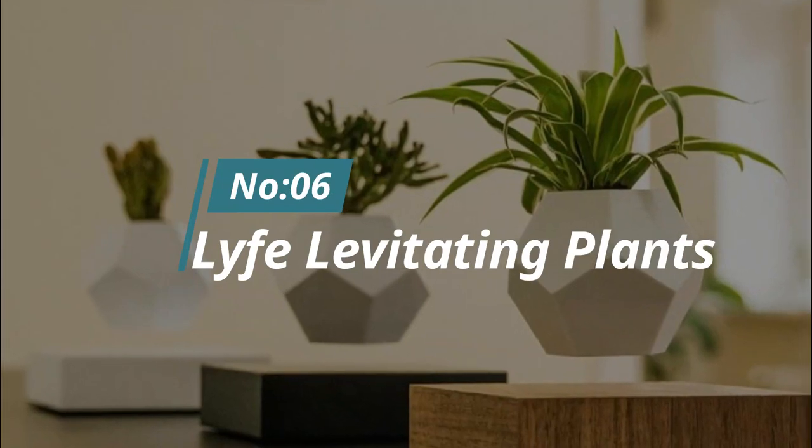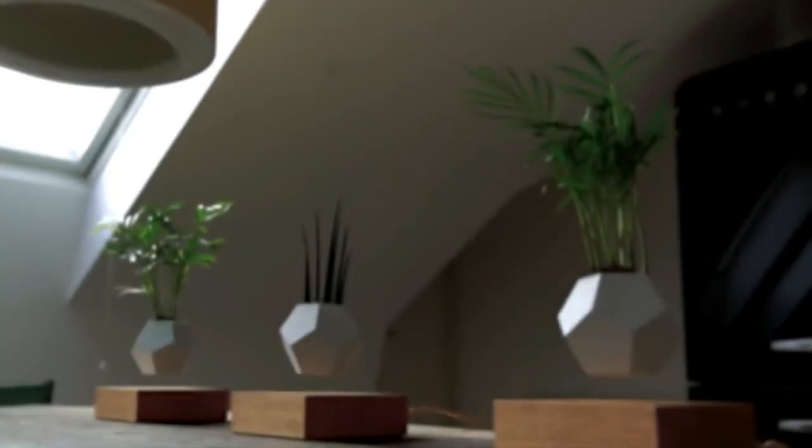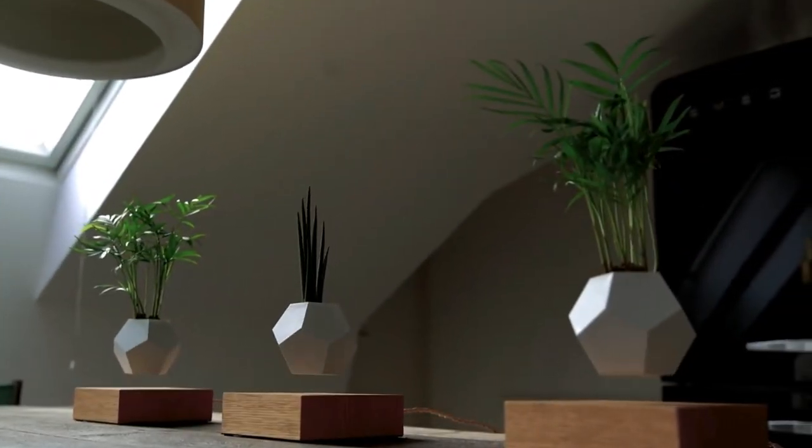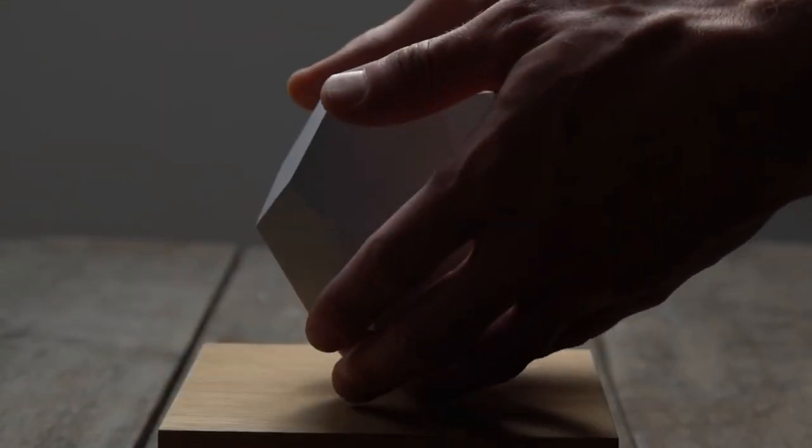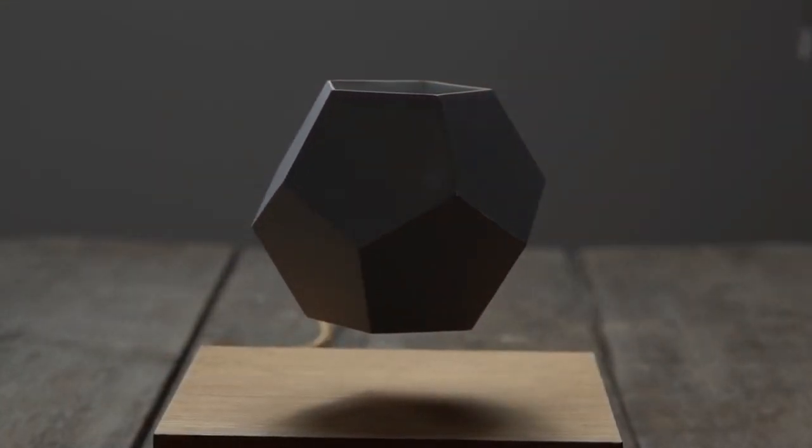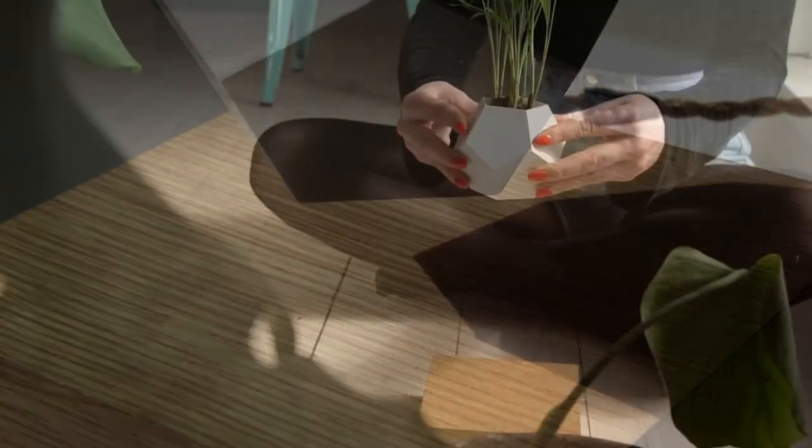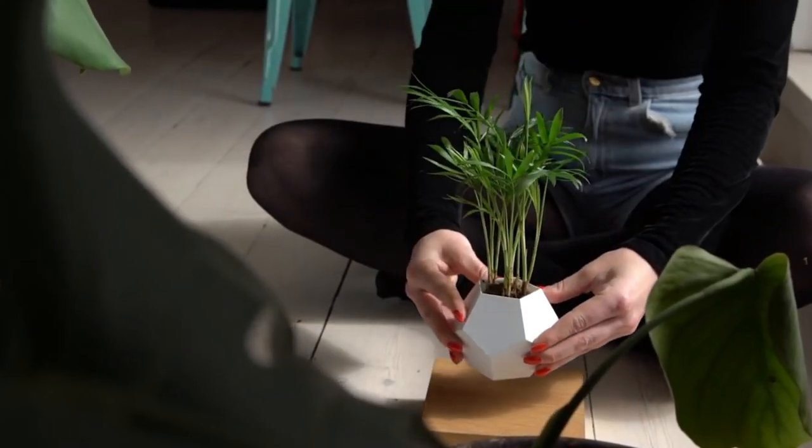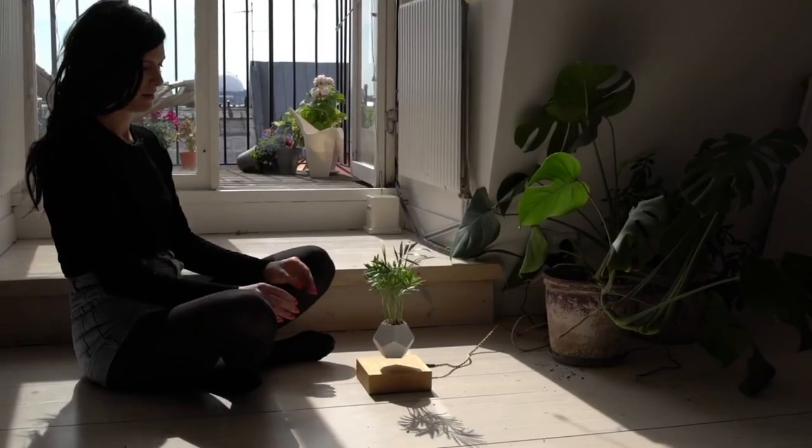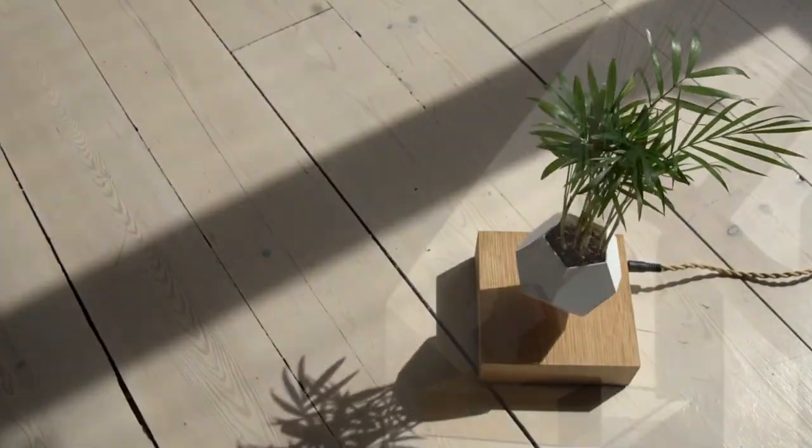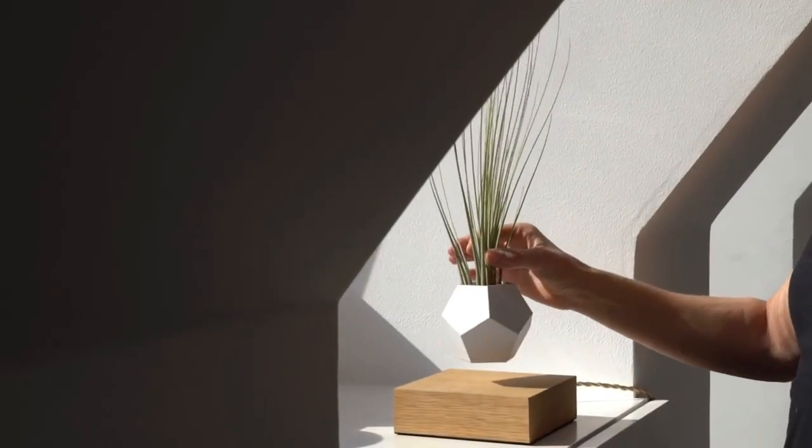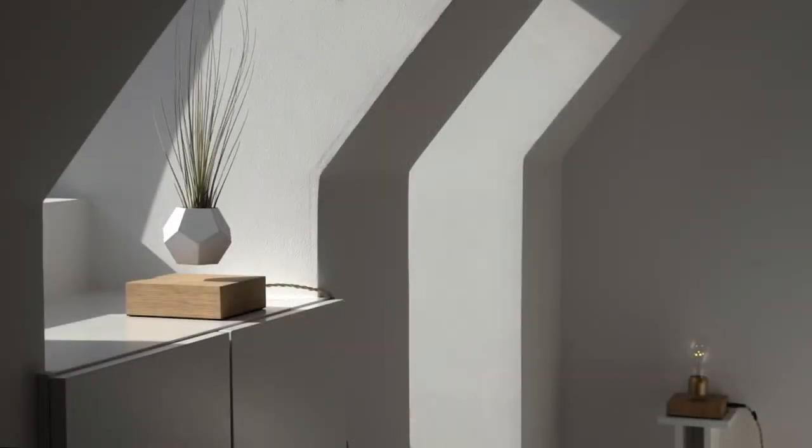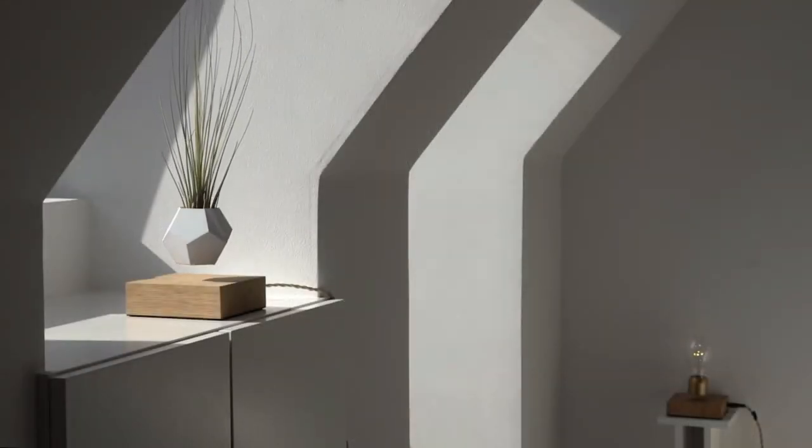Number 6. Life Levitating Plants. Floating clouds are nothing new but floating plants? This pot plant called Life is not one of those fake plastic parts that doesn't even have real plants in them. You can actually put your real indoor succulent inside them and watch them fly like they're in space. It uses magnetic levitation to hover, which means you'll have to plug it into an outlet for it to work.